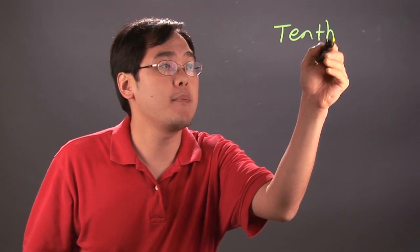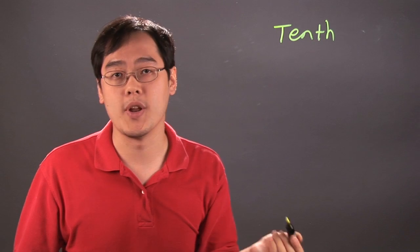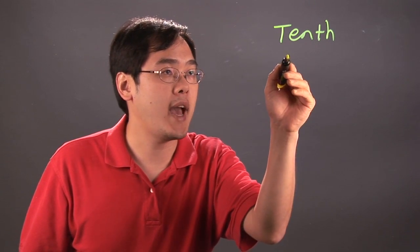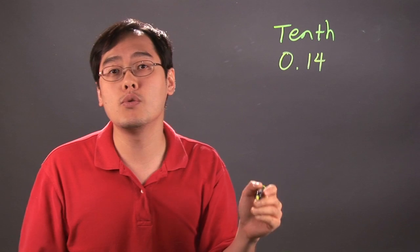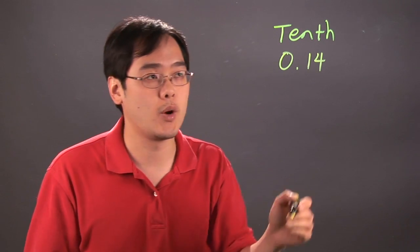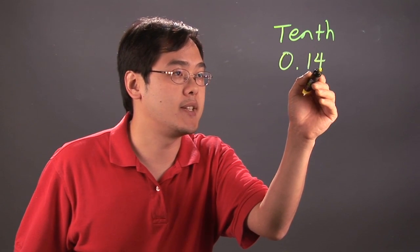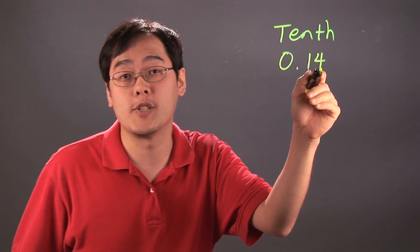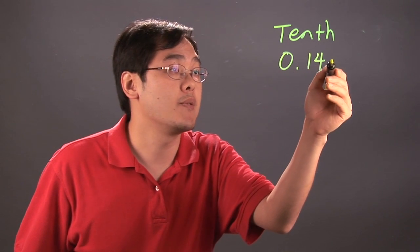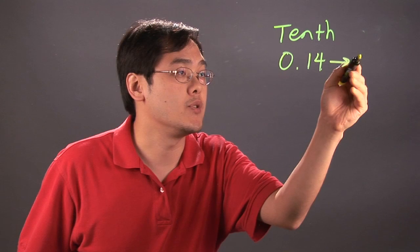So for example, if you're asked to round your answer to the nearest tenth, that means you're rounding to the nearest one decimal place. If you have 0.14 and you're rounding to the nearest tenth, you use the regular decimal rounding rules. You look at the next decimal place and see if it's five or more, you round up, and if it's below five, you round down. So in this case, this rounds off to 0.1.